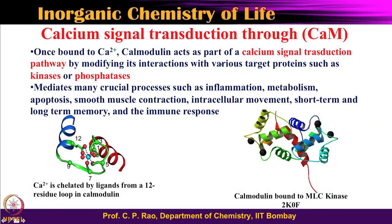Though the calcium is binding here, it creates all these impulses — that is the signal transduction pathway. As a result of these manipulations by calcium concentration or calcium binding to calmodulin, there are a variety of processes in our body: inflammation, metabolism, apoptosis, muscle contraction, intracellular movement, short-term and long-term memory, and the immune response. For all these functions, the calcium-calmodulin role via kinases and phosphatases is very important.